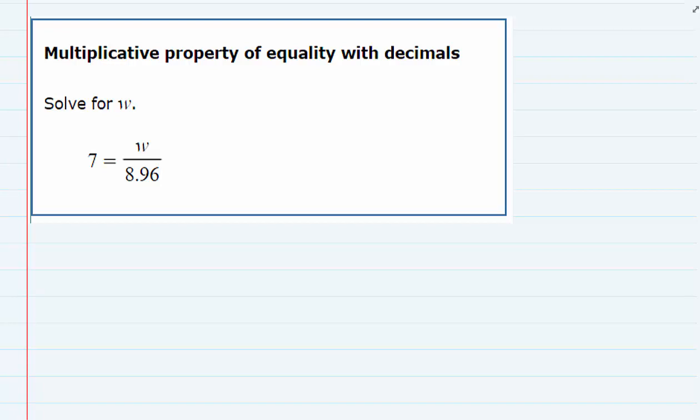We are solving for w in this example, and the w is being divided by a decimal. So our goal is to get the w by itself. We just need to undo dividing by 8.96.